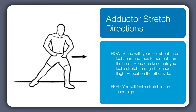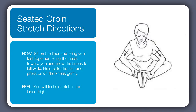Next is the seated groin stretch. You're seated — bring the soles of the feet together with the heels in close to the body, and allow the knees to fall out in the butterfly position. Gently place the elbows onto the knees and press down slightly, feeling a stretch through the groin.